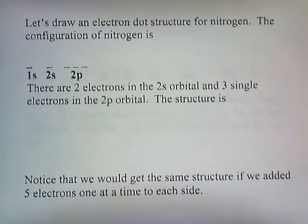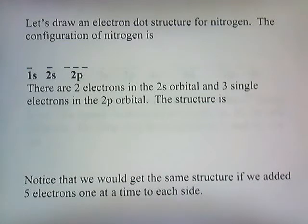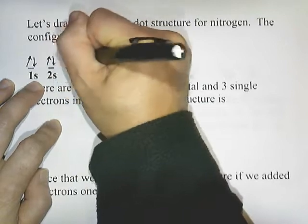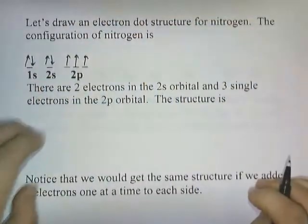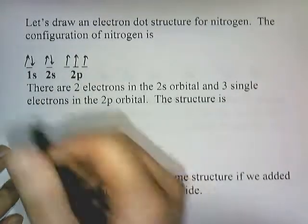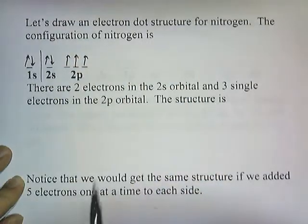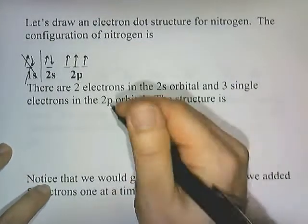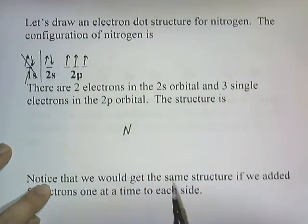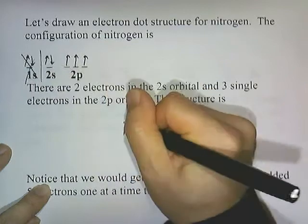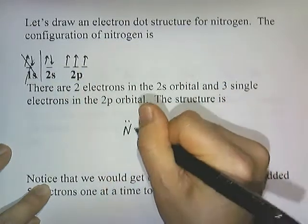Let's draw the electron dot structure for nitrogen. The configuration for nitrogen has seven electrons: one, two, three, four, five, six, seven. There are two electrons in the 2s orbital and three single electrons in the 2p orbital. We're only interested in the outermost or valence electrons — the highest electrons are in the second energy level, so we ignore the 1s2 term. The structure: we draw the symbol N, and we see we have five valence electrons, so we put five electrons around it — the two paired ones here, then one, two, three single ones.